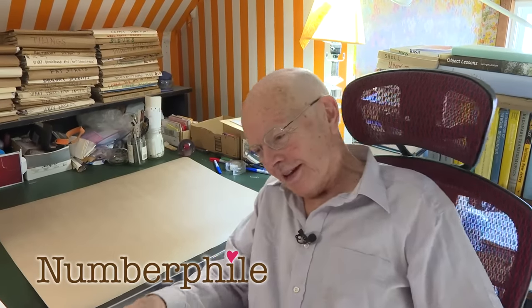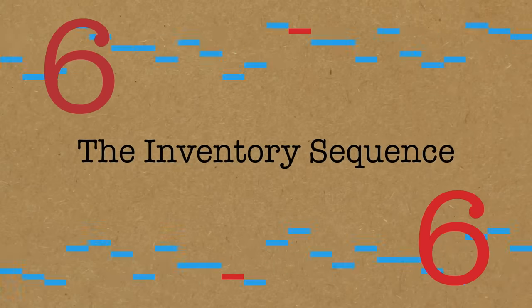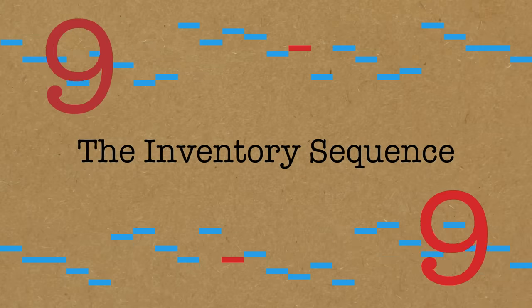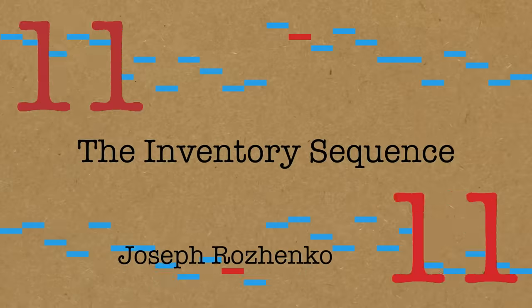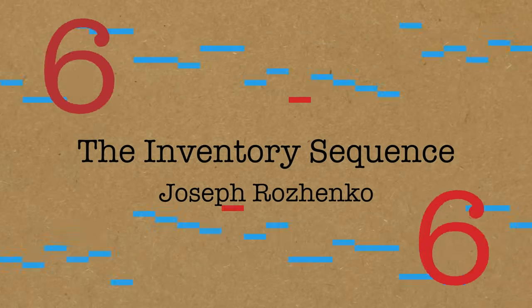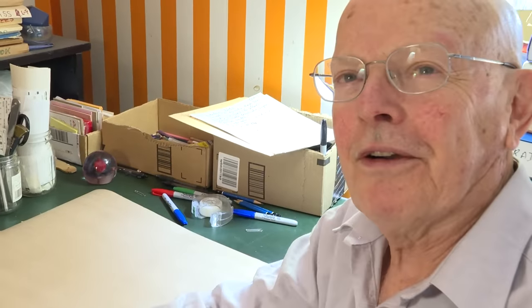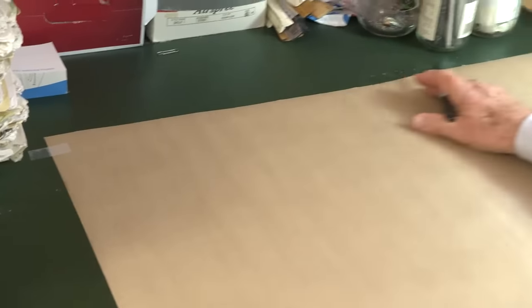Okay, this is a sequence that has everything. It's got mystery, it's got a simple definition, great music. It's called the inventory sequence and it was invented by a guy called Joseph Rozenko and it goes like this. We're going to build up a sequence. Here's what we have so far.